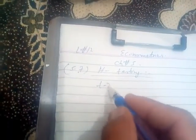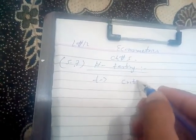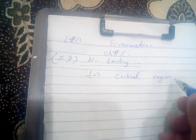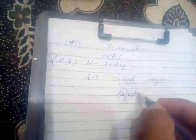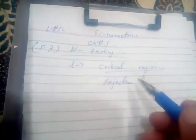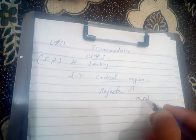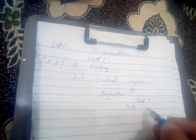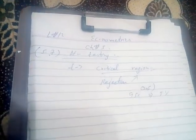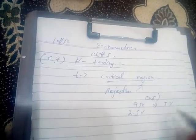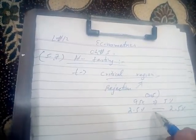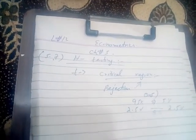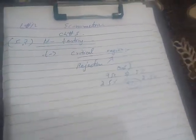T-statistic का हमने कुछ discuss किया। अब critical region क्या होता है — critical region को rejection region भी कहा जाता है। Graphically, जैसे हमने पहले भी discuss किया था, 0.05 के साथ: 95% acceptance area and 5% rejection area — जिसमें 2.5% on the left side and 2.5% on the right side होता है।